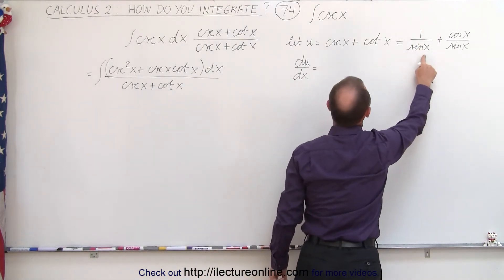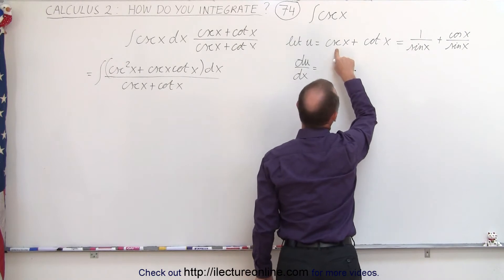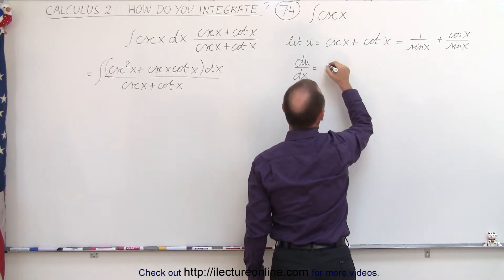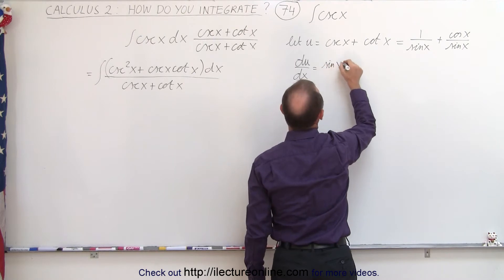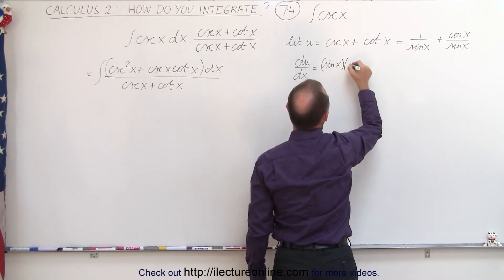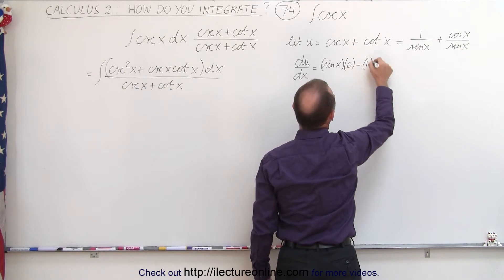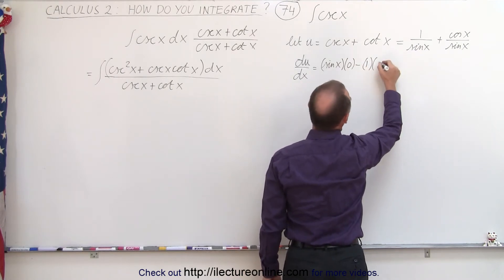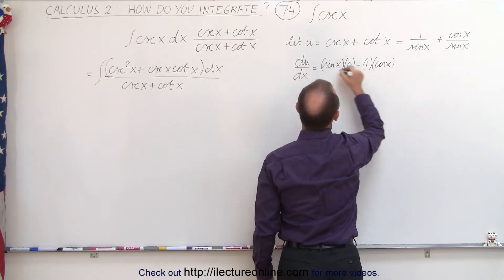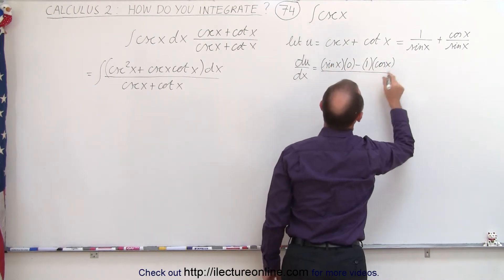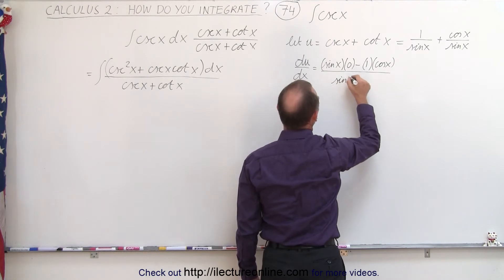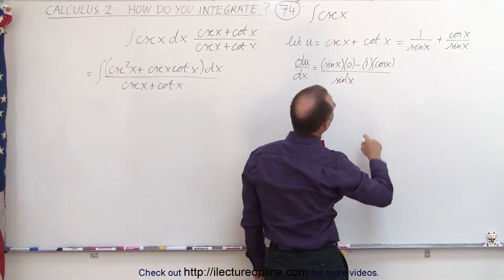The derivative of 1 over sine of x, which is the cosecant of x, will be equal to: we take the denominator, sine of x, times the derivative of the numerator, which is 0, minus the numerator times the derivative of the denominator, which would be cosine of x, all divided by the denominator squared. And so we end up with...